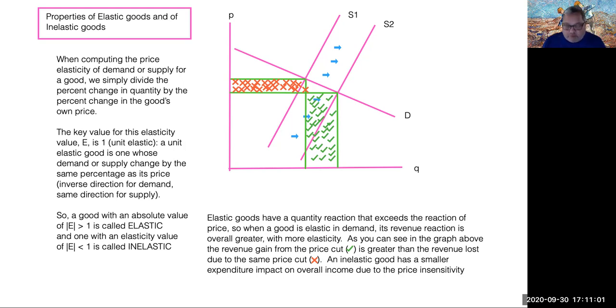If this elasticity of demand has a value greater than one, what you should see graphically is a demand curve that's relatively flat, more horizontal than vertical in the graphic as you see here by the letter D.